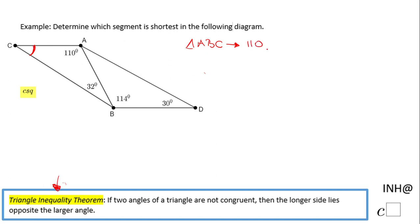Angle C equals 180. I can combine 110 and 32, that is 142, plus the measure of angle C equals 180. Subtract 142 and I have 38 degrees. So this angle here is 38 degrees.